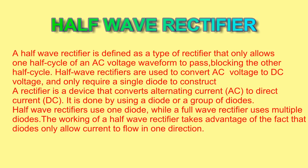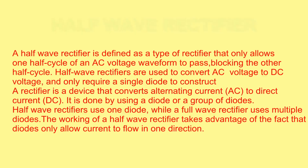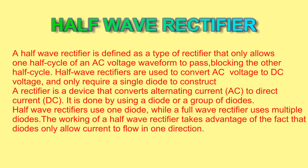A half-wave rectifier is defined as a type of rectifier that only allows one half cycle of an AC voltage waveform to pass, blocking the other half cycle. Half-wave rectifiers are used to convert AC voltage to DC voltage and only require a single diode to construct. A rectifier is a device that converts alternating current to direct current.